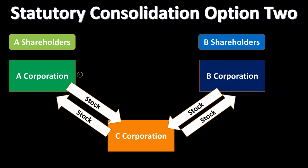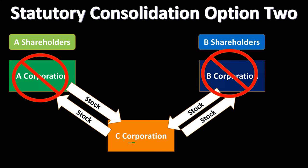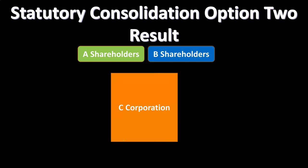Starting with A shareholders owning A and B shareholders owning B, a new company C is created and issues stock to A and B in exchange for A and B's stock. The result is that C becomes the parent of A and B in an intermediate step. C — a shell company — exchanges its stock for the stock of A and B, becoming parent over A and B. C then liquidates A and B, and A and B shareholders now have some type of controlling interest over the new entity, company C.